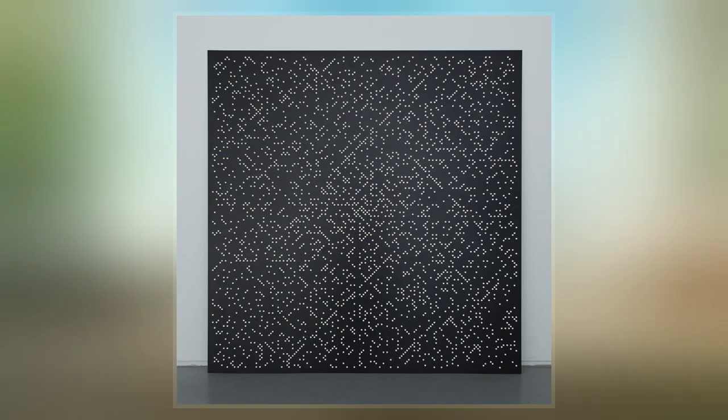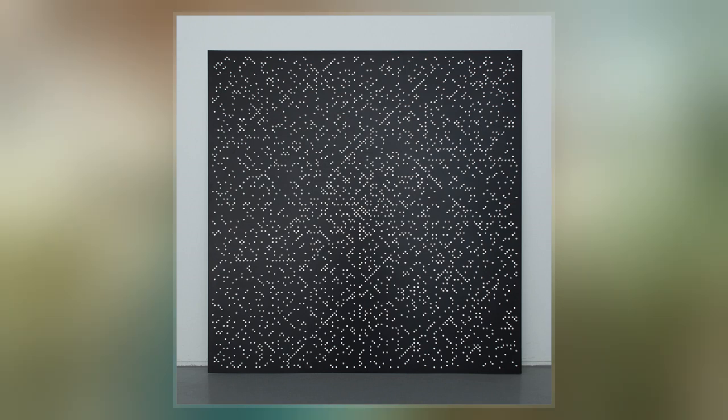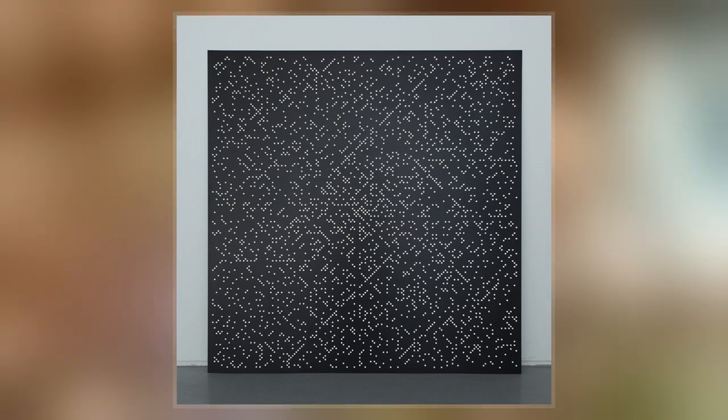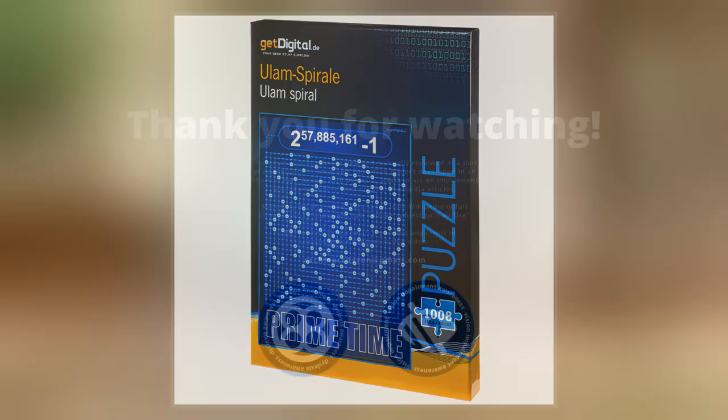In 1932, more than 30 years prior to Ulam's discovery, the herpetologist Lawrence Klauber constructed a triangular, non-spiral array containing vertical and diagonal lines exhibiting a similar concentration of prime numbers.